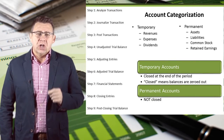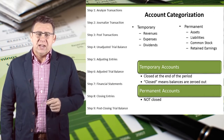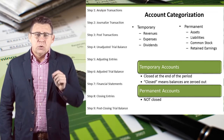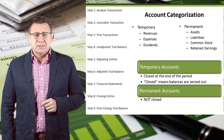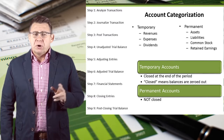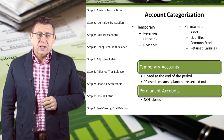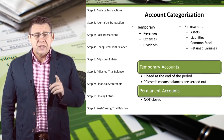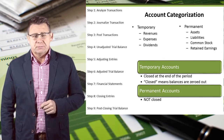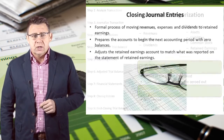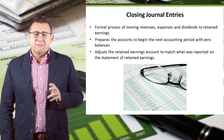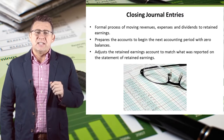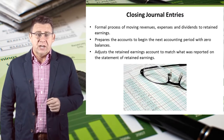Temporary accounts are closed at the end of the accounting period. Closed means we want to zero the account balance. Permanent accounts are unaffected by closing journal entries, with the exception of retained earnings. The closing journal entry is a formal process of moving revenues, expenses, and dividends to retained earnings.